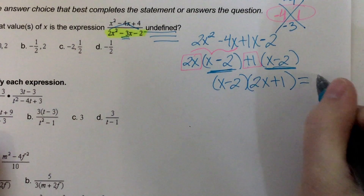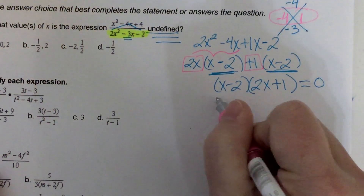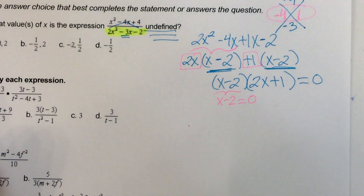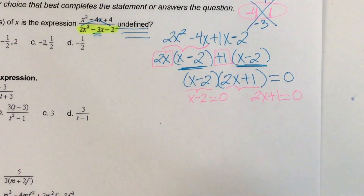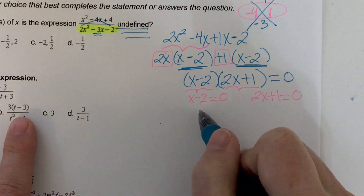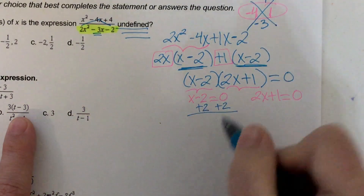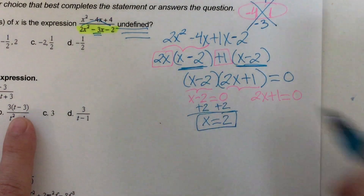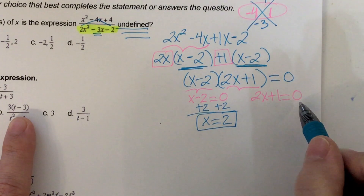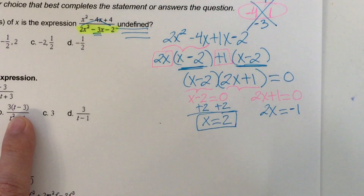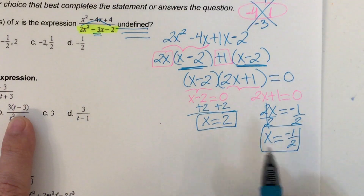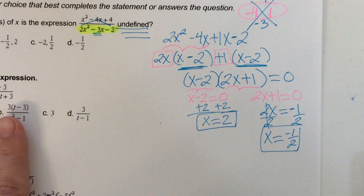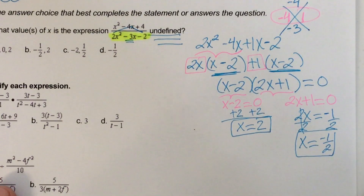So my denominator factors as (x minus 2)(2x plus 1). Now I set each factor equal to zero. For x minus 2 = 0, adding two to both sides gives x = 2. For 2x plus 1 = 0, subtracting one gives negative one, then dividing by two gives x = negative one-half. So the two values where this expression is undefined are positive two and negative one-half — answer choice B.